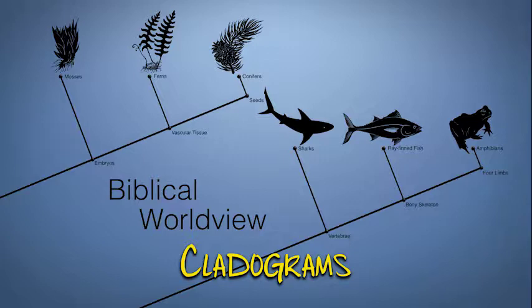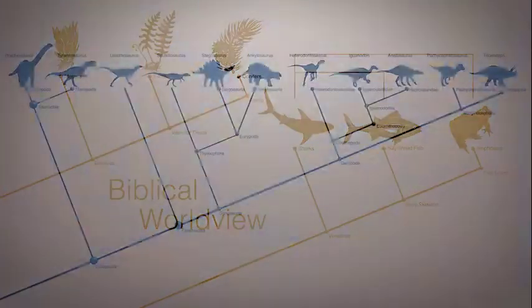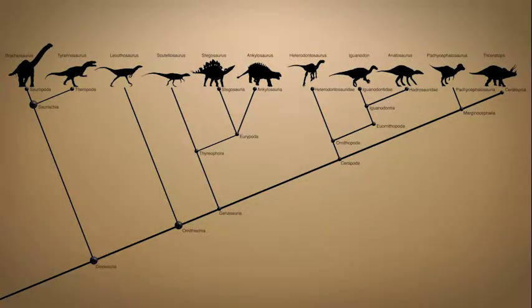Cladograms help scientists see which kinds of creatures have more similarities to each other and which kinds have more differences. With that in mind, let's take a closer look at our dinosaur cladogram.